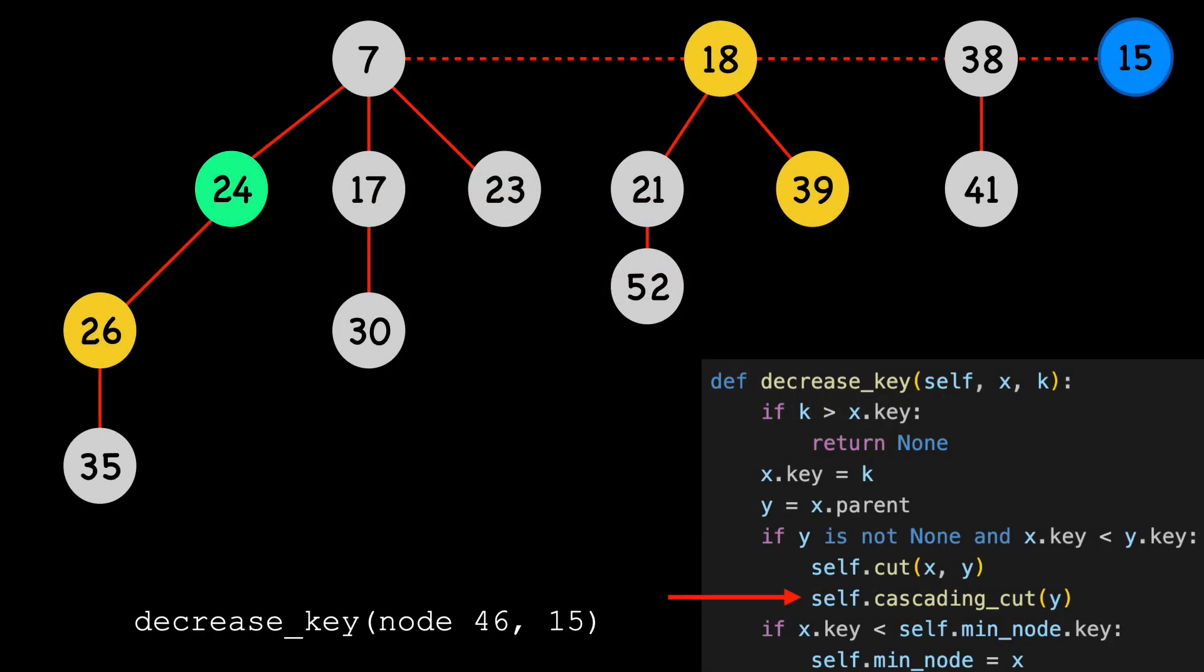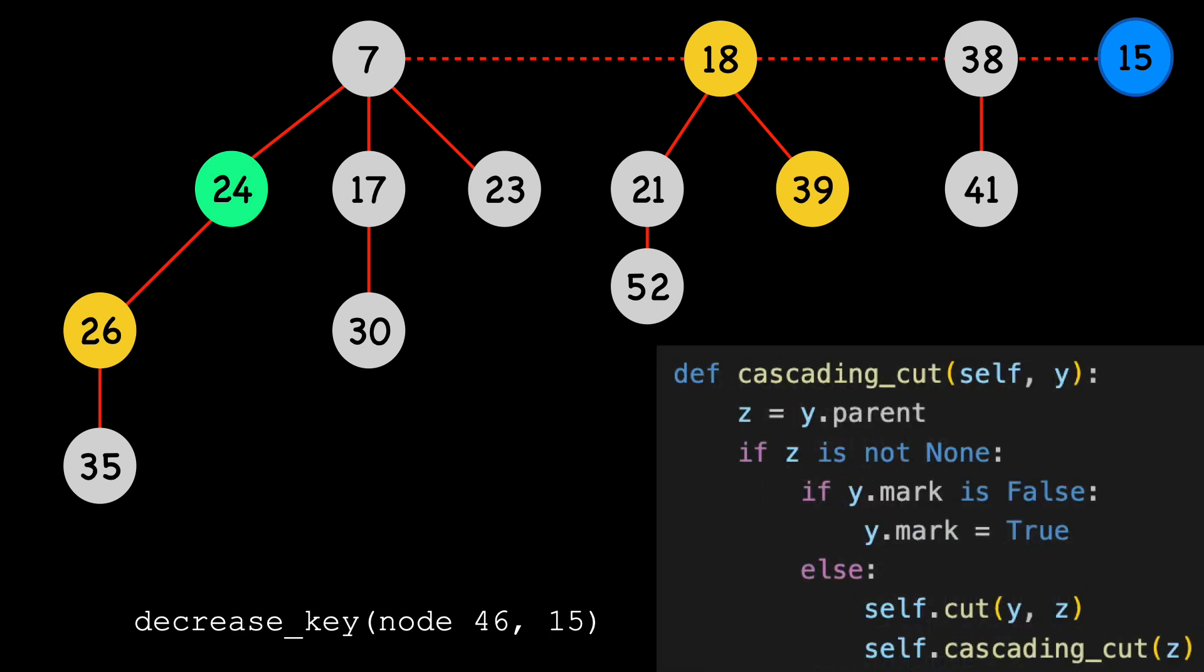Back to our example, I'm going to swap out the decrease key code with cascading cut. We set our pointer to Y's parent, which I'll color purple. Z is not none, but you can see Y is unmarked. We mark it, coloring it yellow, and return.